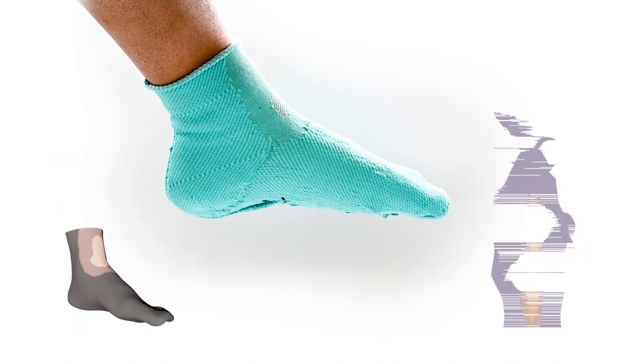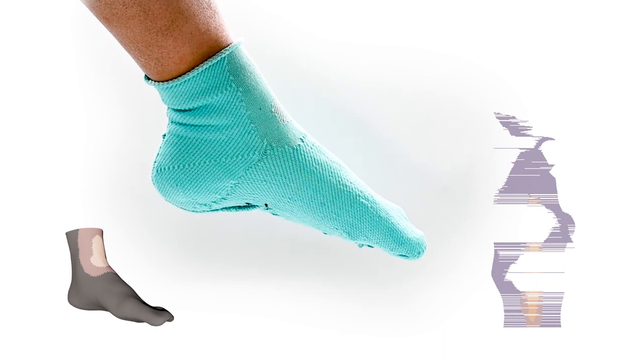Here we show the try-on process of the 4D sock. Its knitting map is shown on the right.